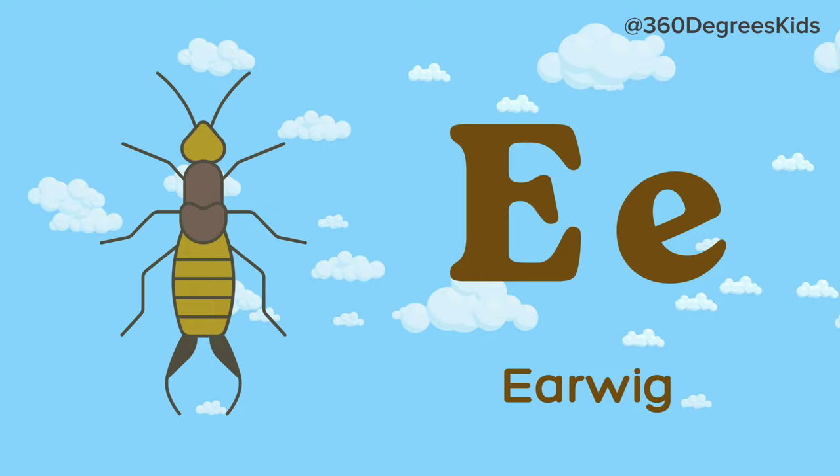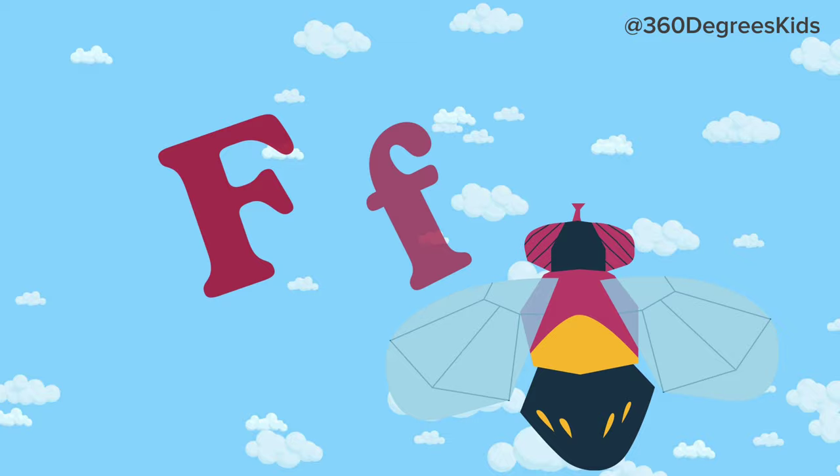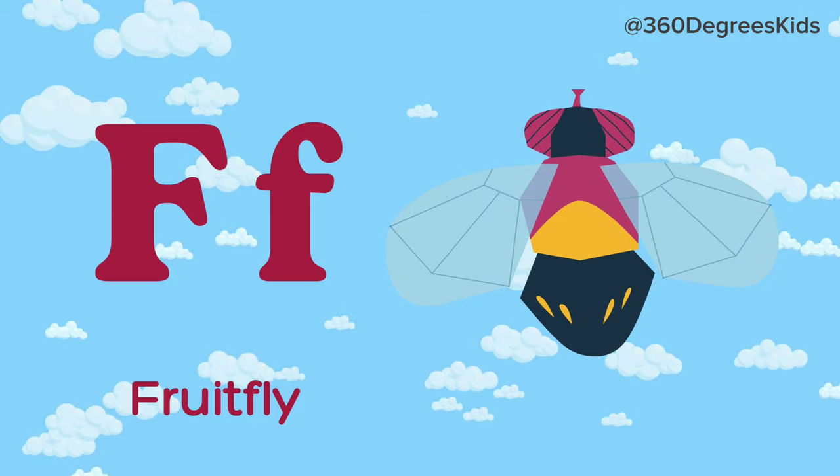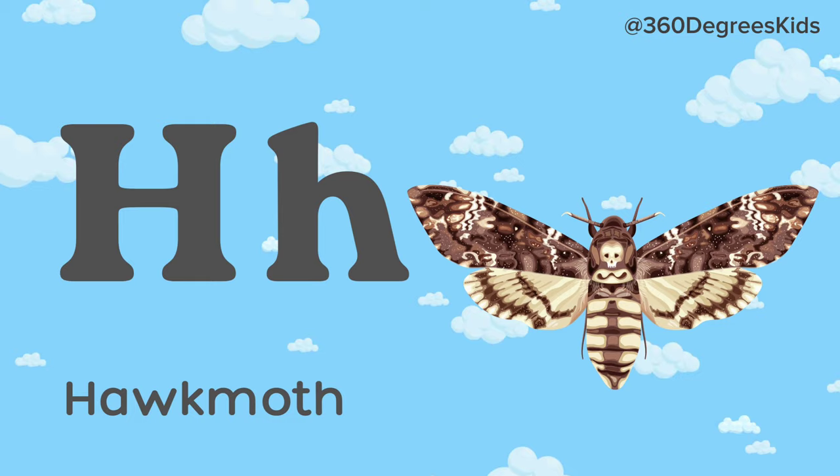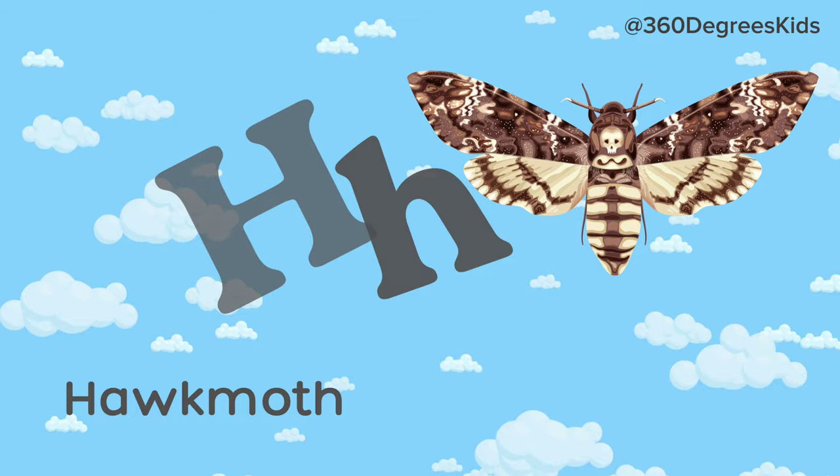E. E for Earwig. F. F for Fruit Fly. G. G for Grasshopper. H. H for Hawk Moth.